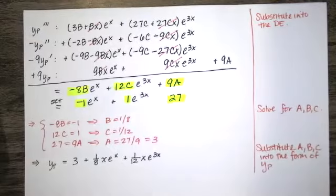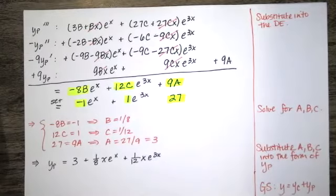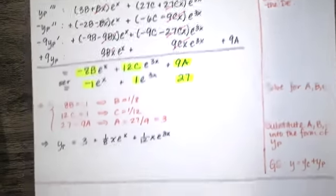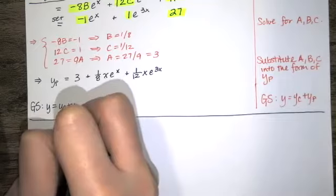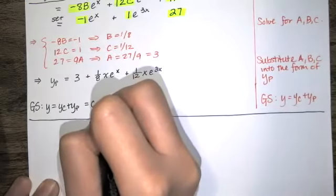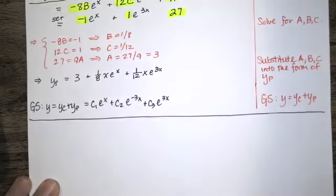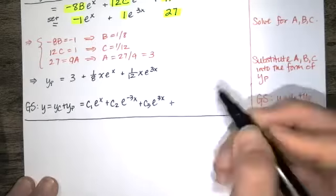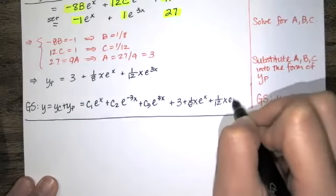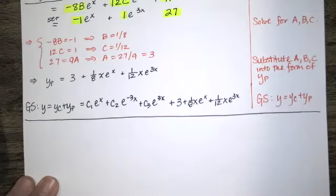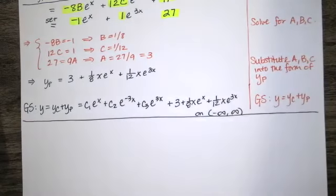Once we have y sub p, we can write the general solution. The general solution is y sub c plus y sub p. In this case that is c1 y1 plus c2 y2 plus c3 y3 — because it's a third order equation — plus y sub p, which we just found. All of these functions work for all real numbers, so this sum of six functions is the general solution on the entire real line.